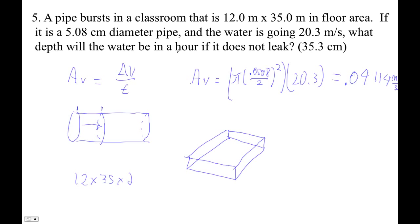And then it's an hour. That's 3,600 seconds. Okay, and so the volume is going to be 0.04114 cubic meters per second times 3,600 seconds. So I'm going to multiply the answer on my calculator by 3,600, and I got 148.12 cubic meters. Wow.